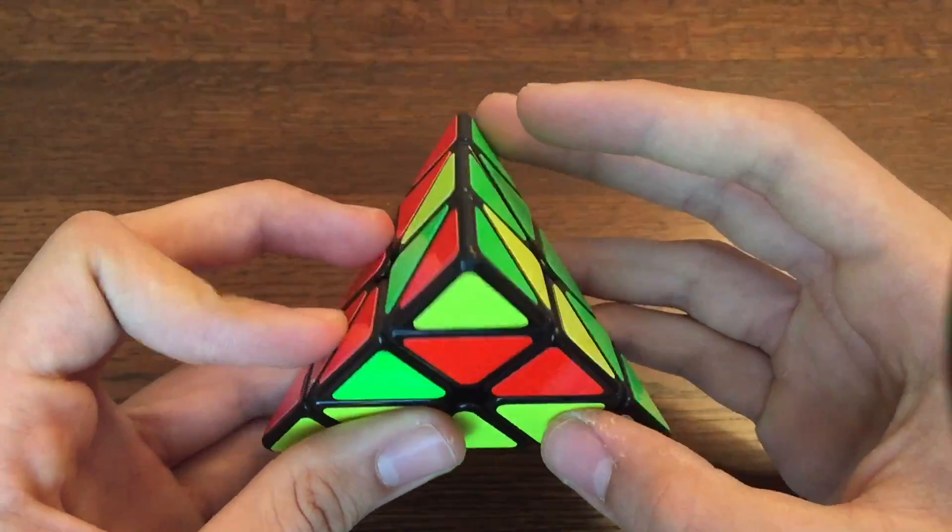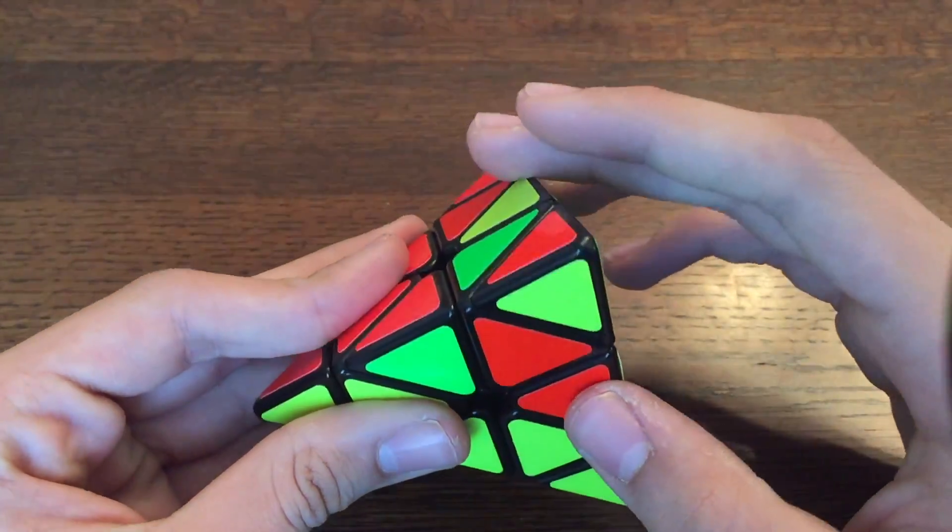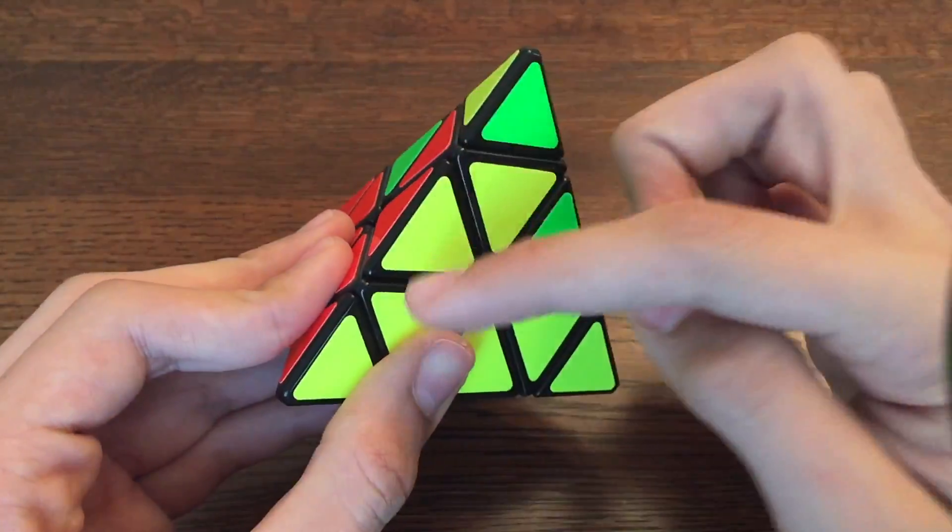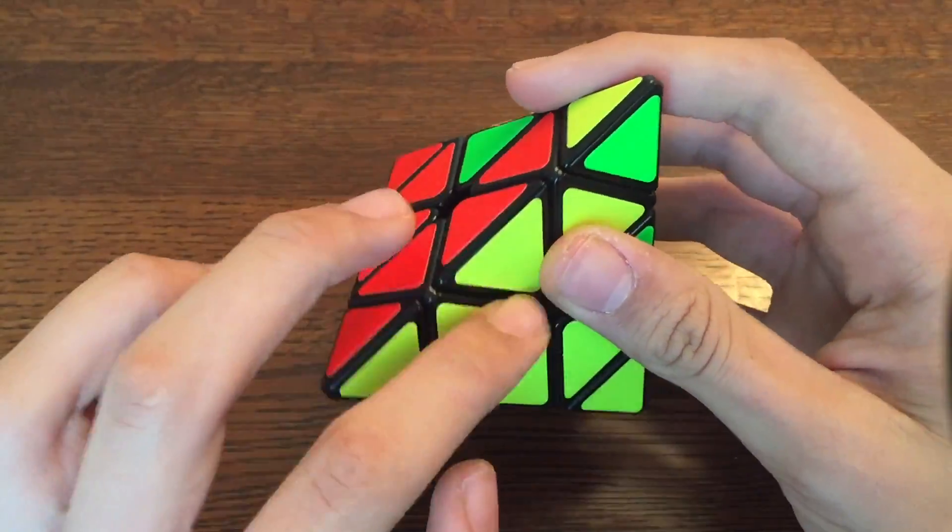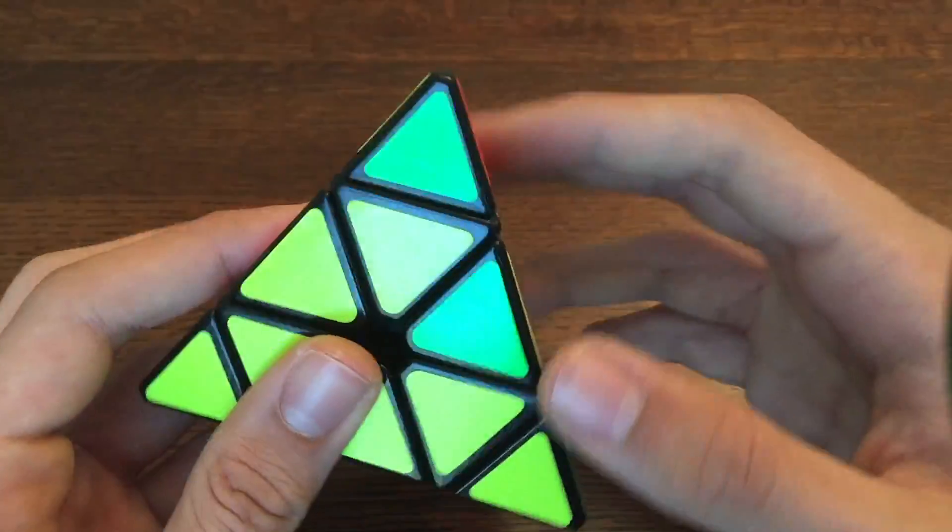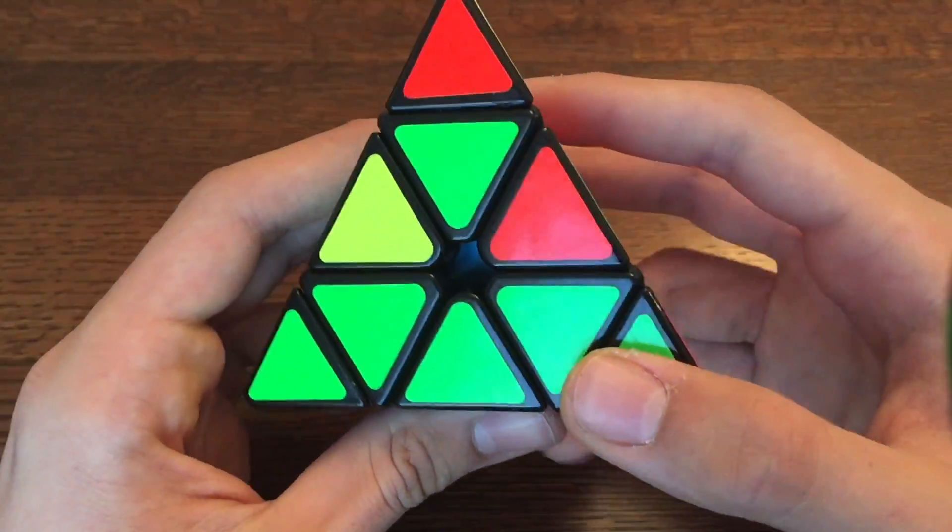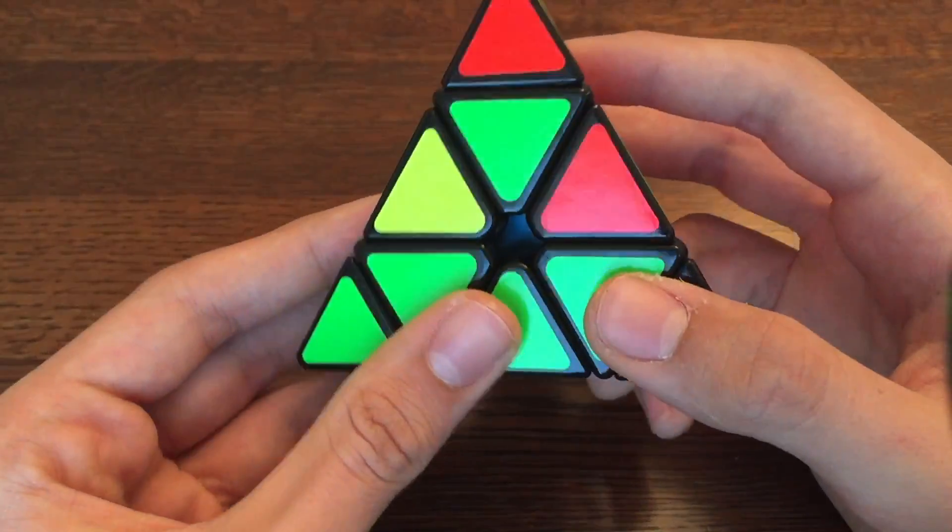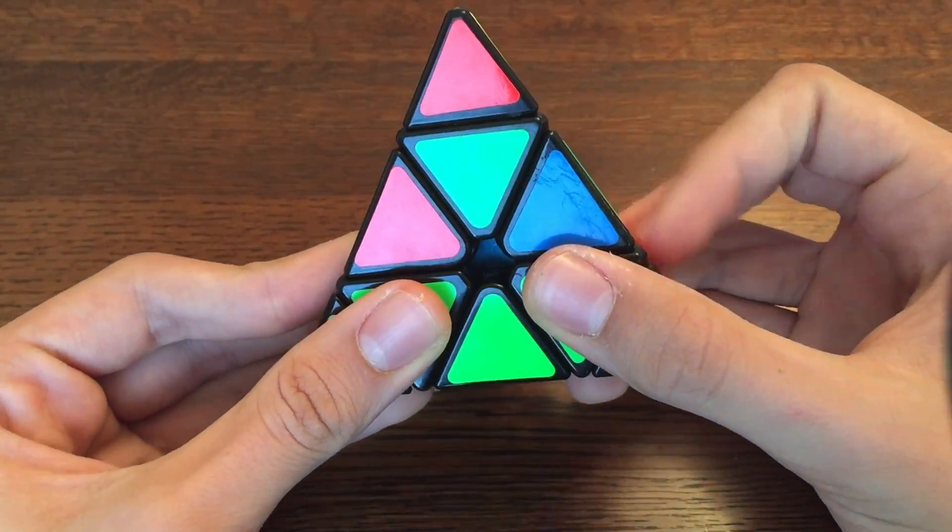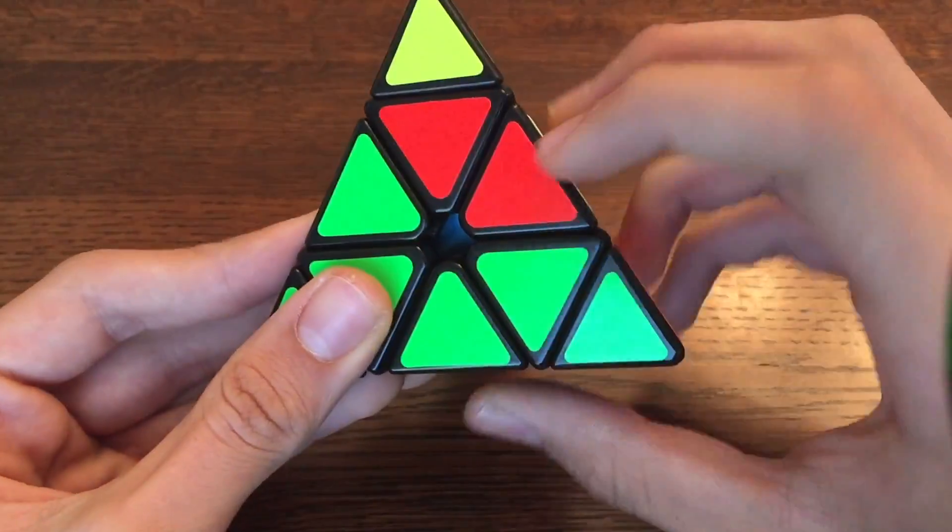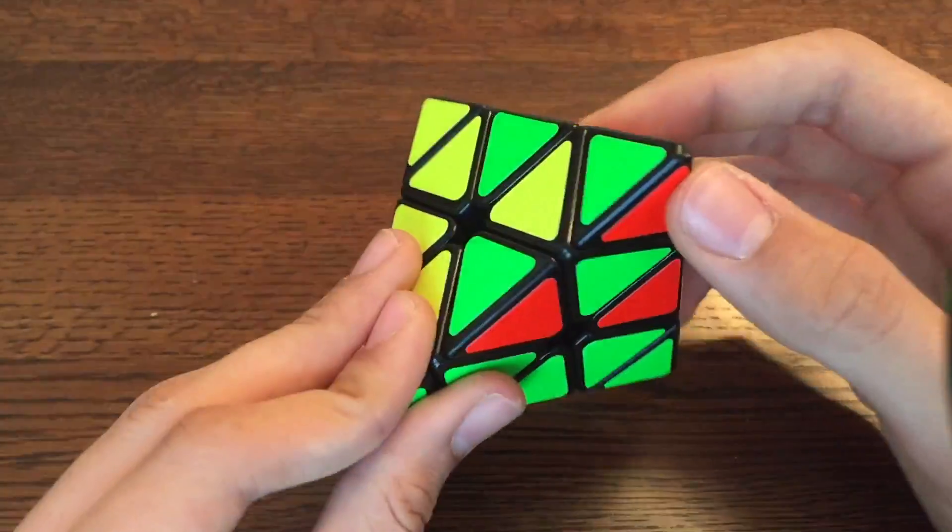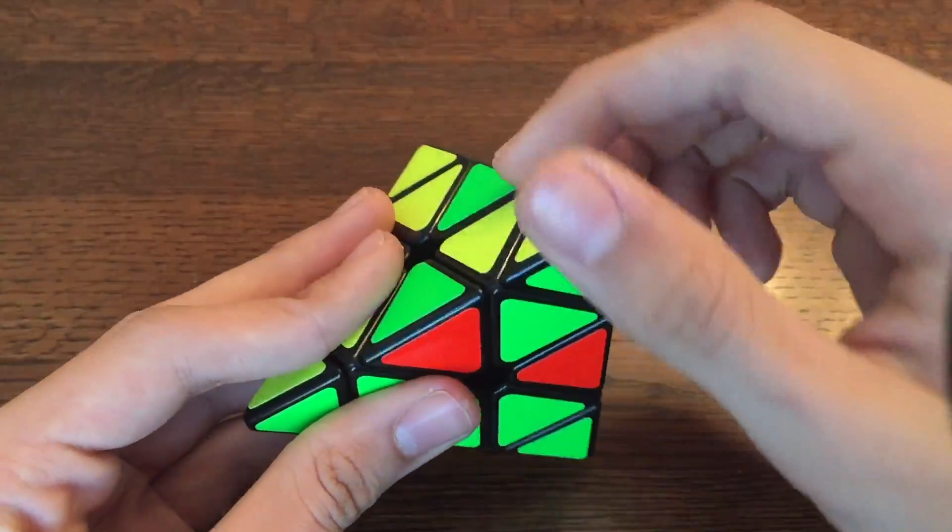So the next step is to get the top. What you have to do is find an edge piece that matches the face's color. So this one does, because it is a red and yellow, and this is a yellow face, and this is going to be a red face. So put that in the back, and then you're going to do L, R, I, L, I, R, U, R, U, I, R, R, and just rotate the top corner.